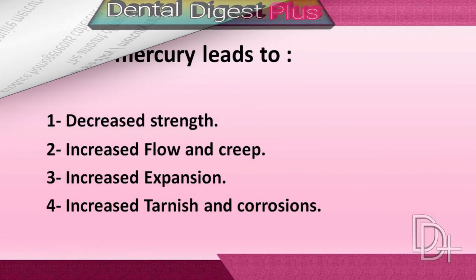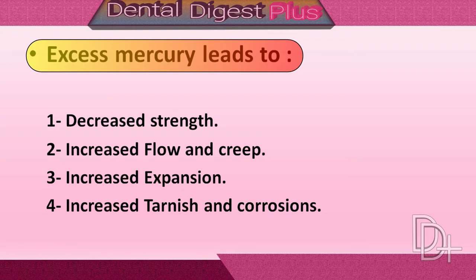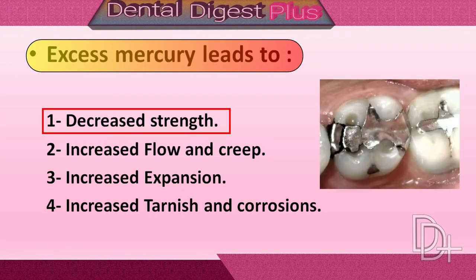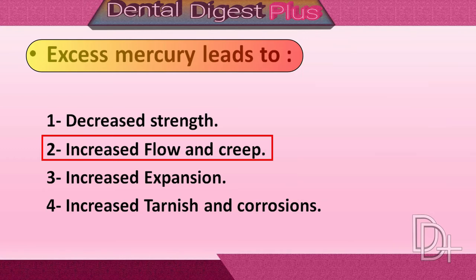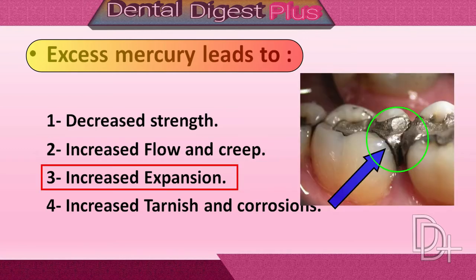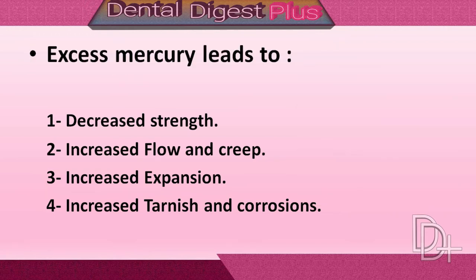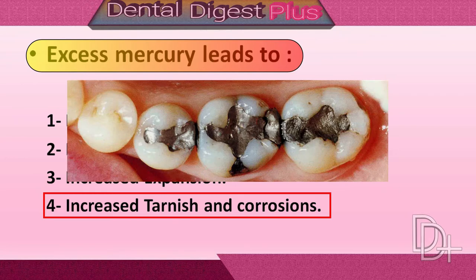Excess mercury in the restoration can lead to decreased strength, increased flow and creep, which results in failure of the restoration. It also causes increased expansion, which can cause pain during chewing and disturbed occlusion, as well as increased tarnish and corrosion, which can lead to failure of the restoration.